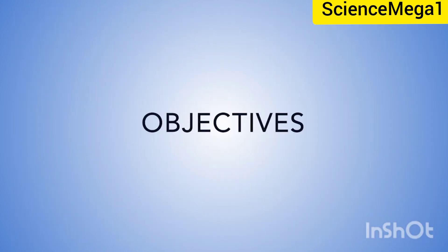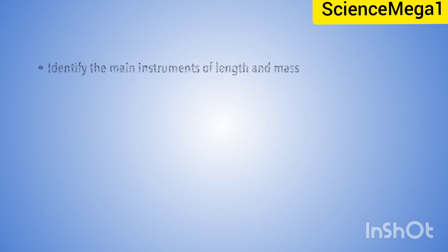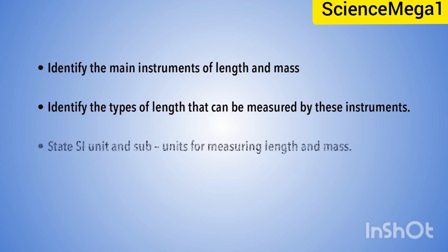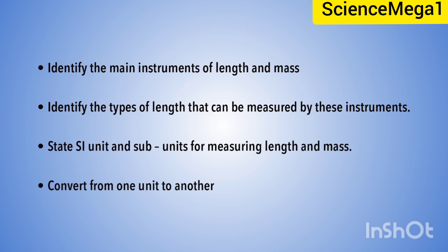By the end of this lesson, you will be able to: 1. Identify the main instruments for length and mass. 2. Identify the type of length that can be measured by these instruments. 3. State the SI units and the subunits for measuring length and mass. 4. Convert from one unit to another.